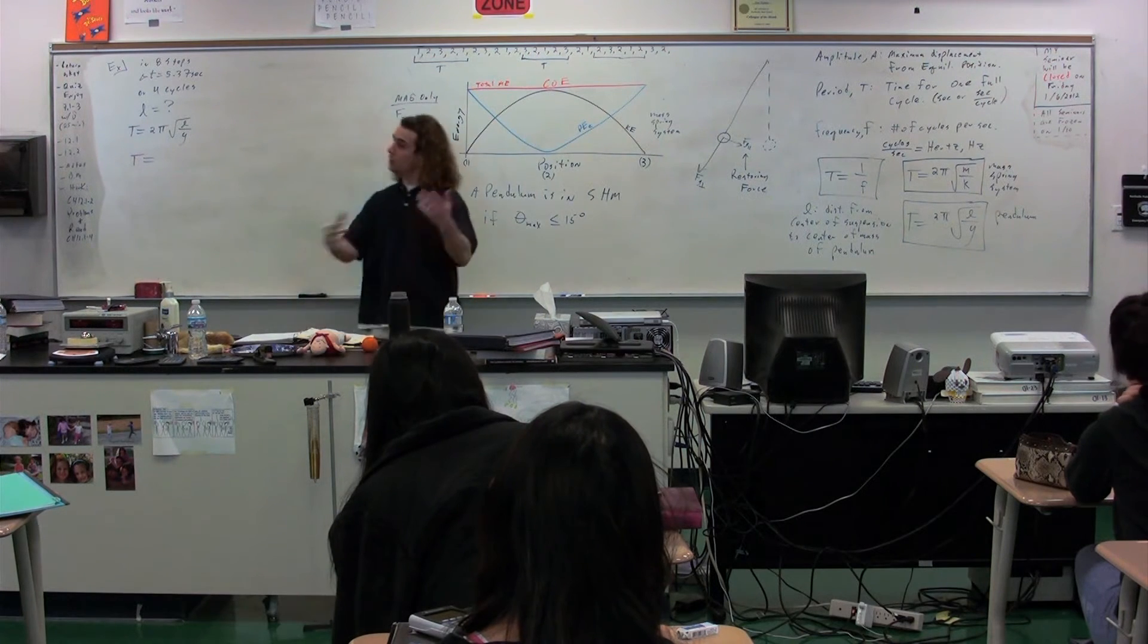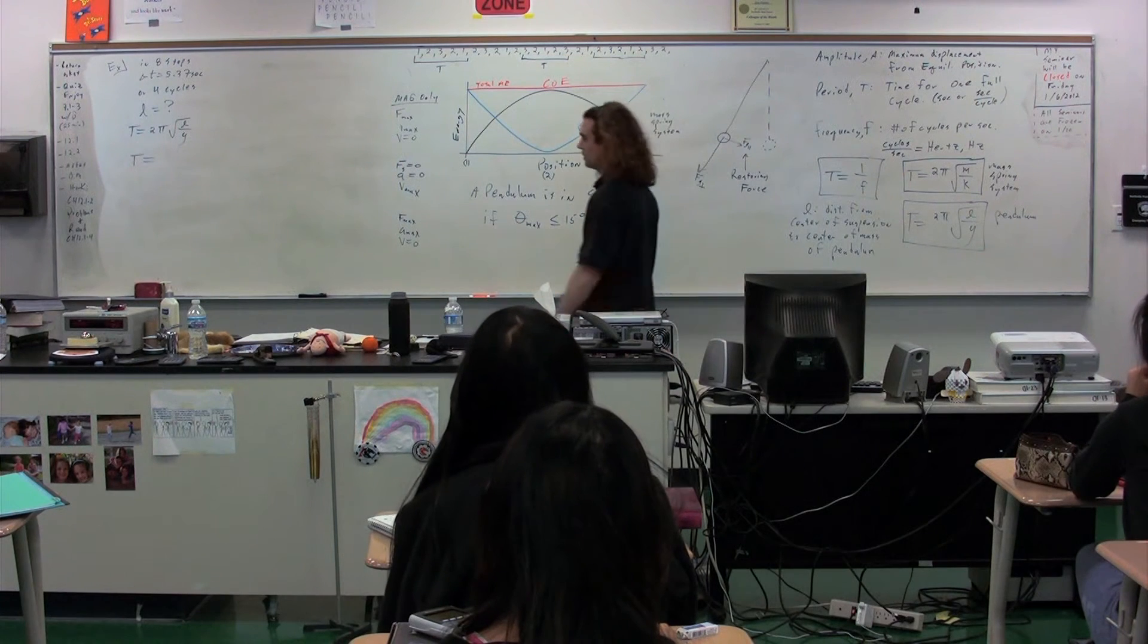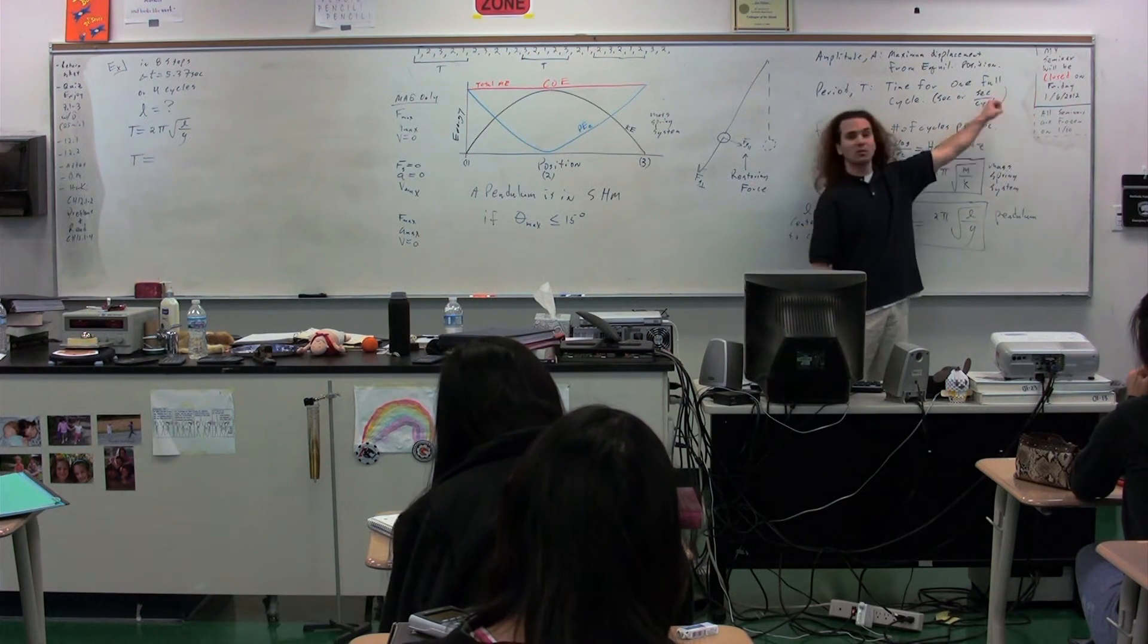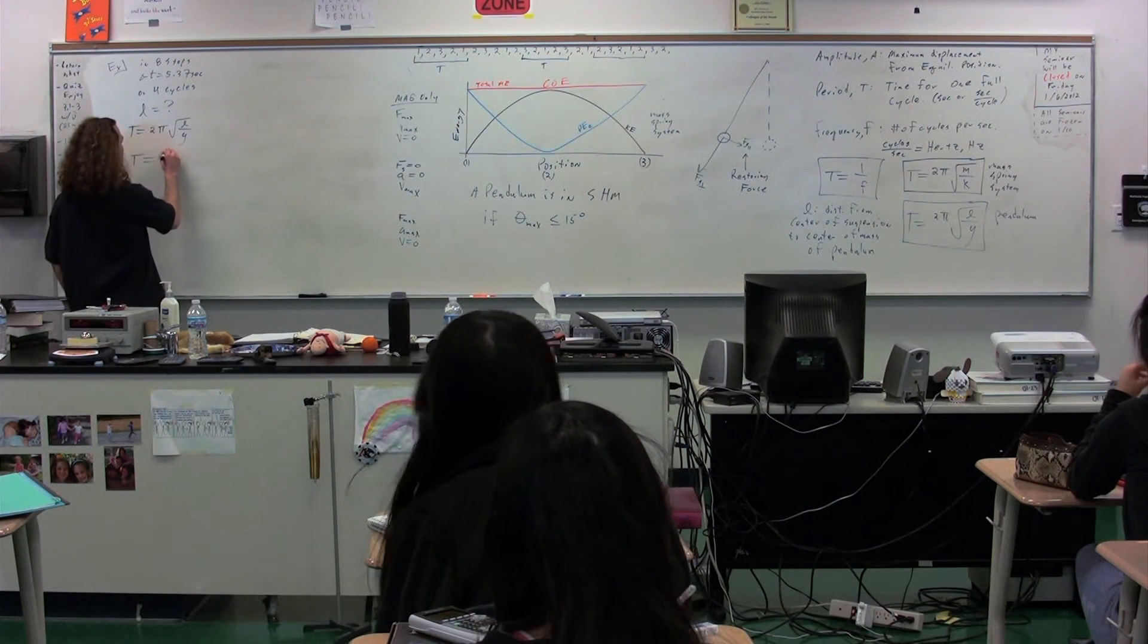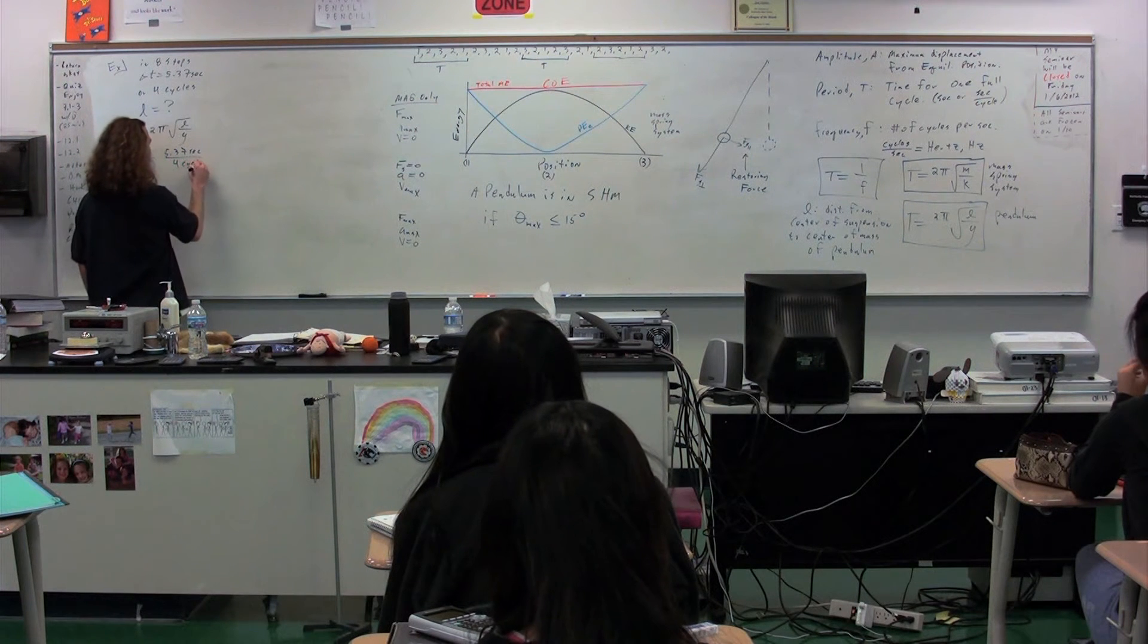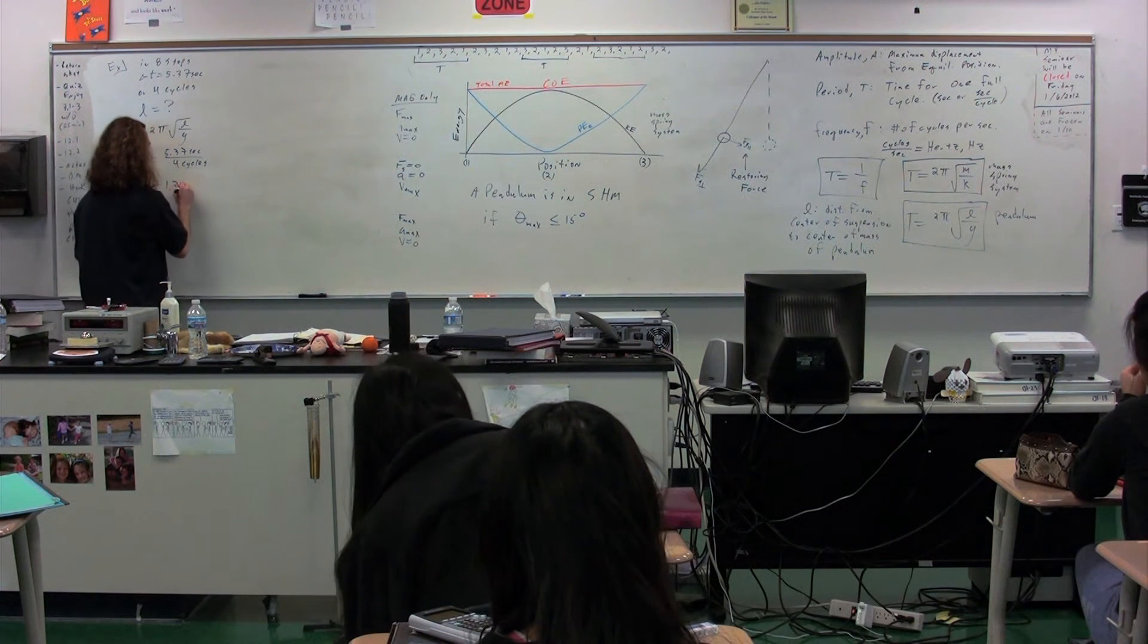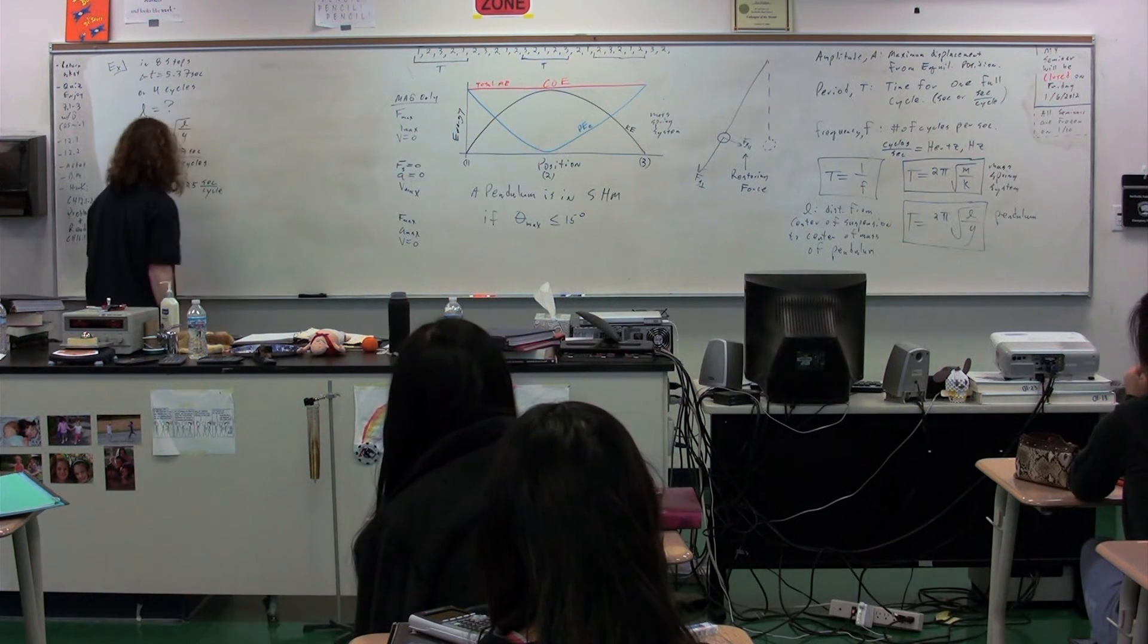We don't actually have to first find the frequency. We could, but we could find the period directly. Emma? Can you just take the time and divide it by four, because you have four cycles? The period is the time for one full cycle, or seconds per cycle. We have the seconds and the cycles. So, we could figure out it's just going to be the time, the 5.37 seconds divided by the cycles, which is four cycles. So, the period is equal to? Bless you. 1.3425. And that's in seconds per cycle. 1.3425.